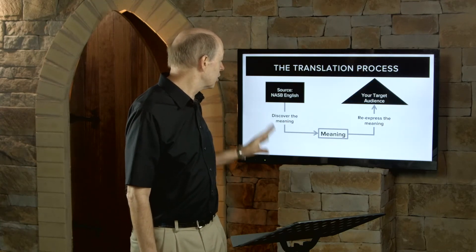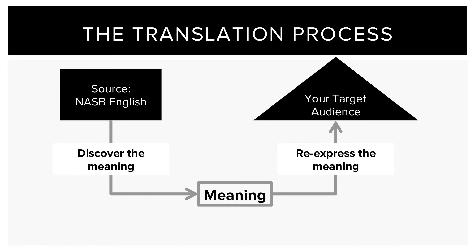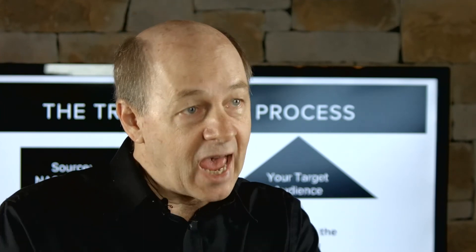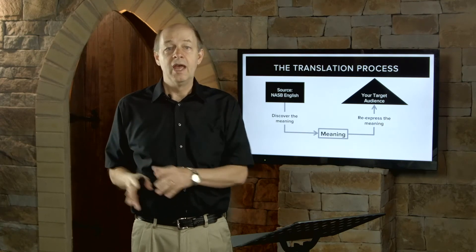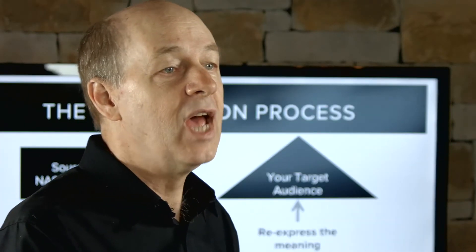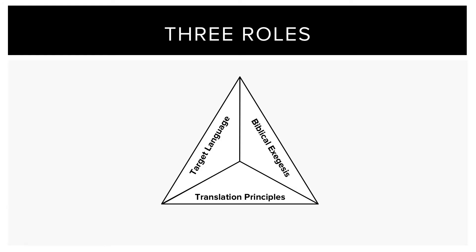But now we're going to shift our emphasis. We are going to look at the upward arrow — this is where you actually re-express the meaning we have discovered with your target audience in mind. As you consider your target audience and translate these 12 verses from the NASB into a wording appropriate for them, you will look specifically at the source language text and also at the tools that you have produced in unpacking and analyzing the meaning. When a translation team undertakes an actual translation project, there are three key areas where there must be proficiency: the target language, biblical exegesis, and translation principles.